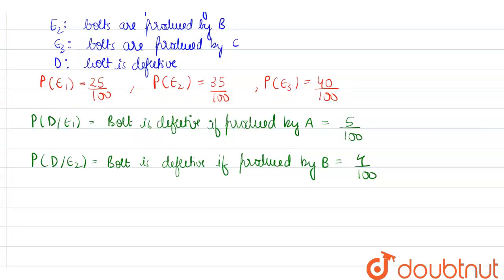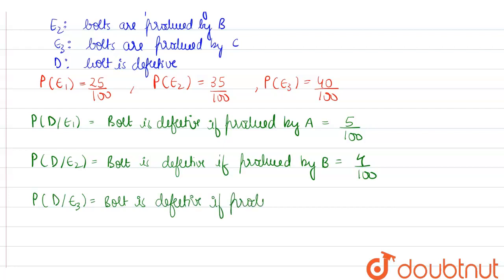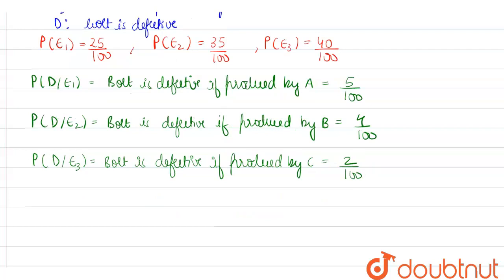Moving on further, the probability of event D when E3 occurs — that is, the bolt is defective if produced by C — is 2 percent.